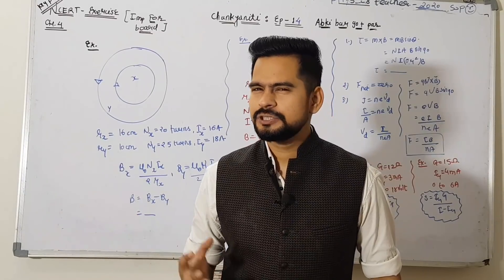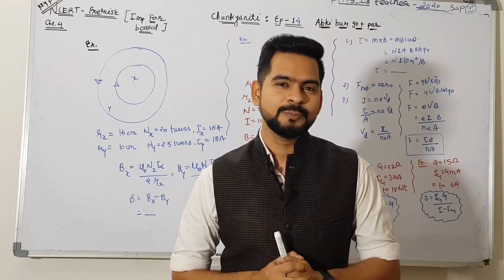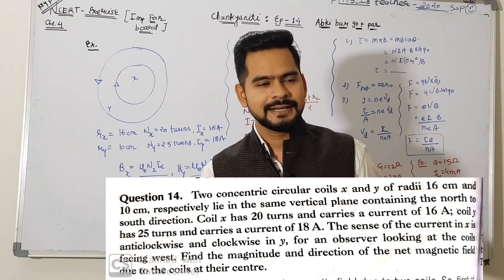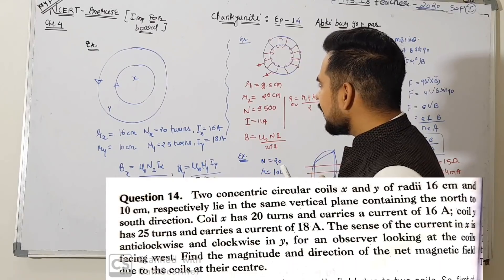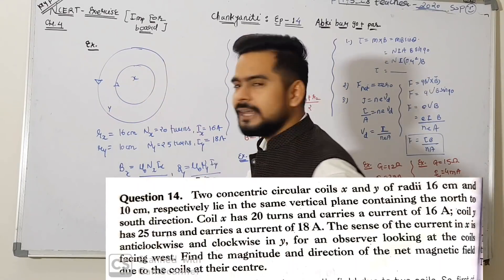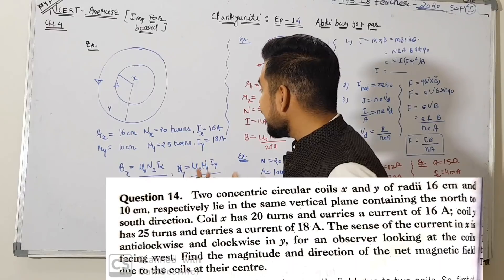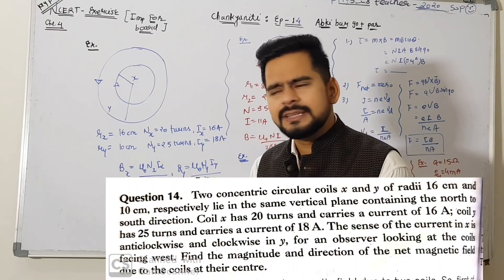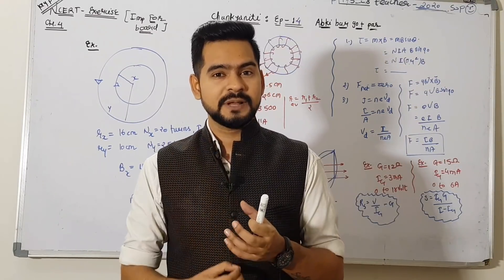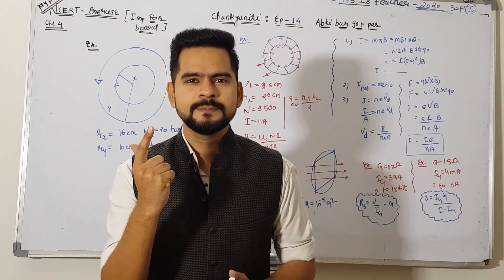Aaise question aane ke 99.99% chances hain from this chapter, because direction ka keel hota hai. Think about what happens when you have two coils. Two circular coils - current in one is clockwise, in the other anticlockwise. Radius is different: rx and ry, currents are ix and iy. If you are asked the net magnetic field, ek coil clockwise banayega, doosra anticlockwise banayega. Hume dekhna hoga ki dono ka direction same hai ya opposite hai. Agar direction same ho toh plus karo, agar direction opposite ho toh minus karo.